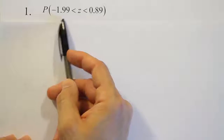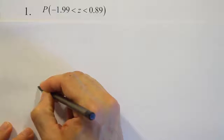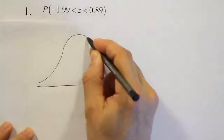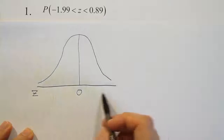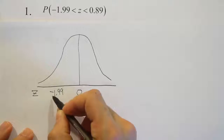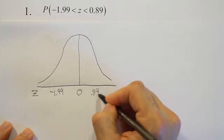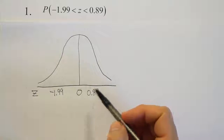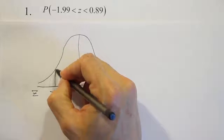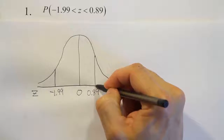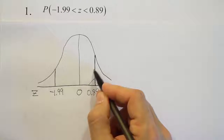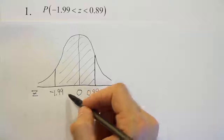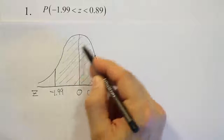We're looking for the probability that z is between negative 1.99 and 0.89 on the bell curve. I'm going to draw a little bell curve and label the center at zero — this is a z number line — and place negative 1.99 on the left because it's negative, and 0.89 on the right because it's positive. Because z is physically between these two values, I want to shade between those two numbers. So the area I'm looking for is the area between negative 1.99 and 0.89.